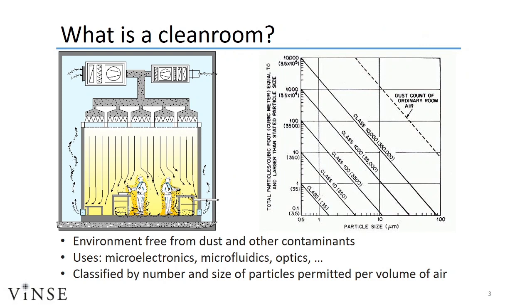While many industries utilize clean rooms, including the automotive and pharmaceutical industries, this orientation focuses on considerations of a semiconductor process clean room. In general, clean rooms are classified by their contaminant level, measured by the total number of particulate matter within a volume of air. For instance, a class 1000 clean room would have up to 1000 particles of 0.5 micron or larger within a cubic foot. For reference, normal room air has about 1 million particles within that same cubic foot, so it would be classified as a class 1 million.